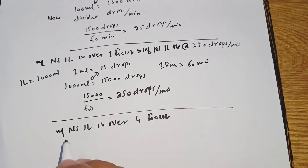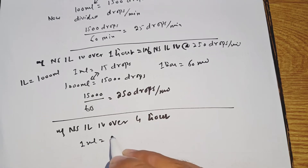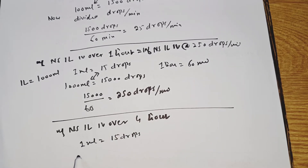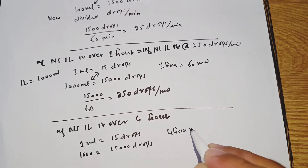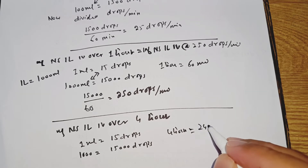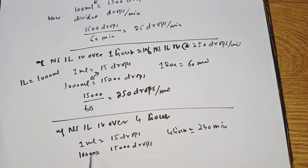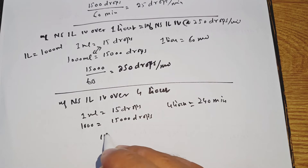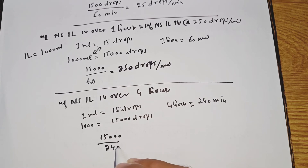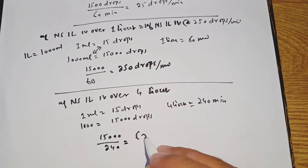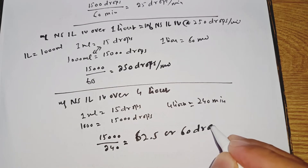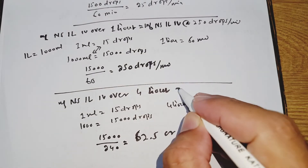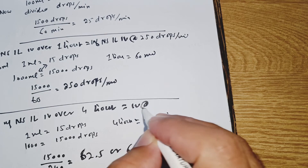Another example: infusion normal saline 1 liter IV over four hours — how many drops per minute? One mL is equal to 15 drops, so 1000 mL equals 15,000 drops. In four hours we have 240 minutes, so divide 15,000 by 240. The answer is 62.5, or approximately 60 drops per minute.